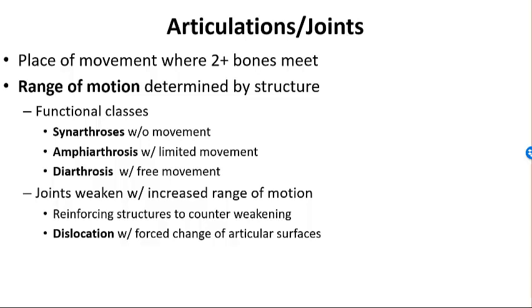Amphiarthrotic joints allow for a slight amount of movement — more than a synarthrotic joint, but still much stronger than a freely movable joint. A diarthrotic joint is this freely movable joint. These joints provide a wide range of motion and are typically seen in the joints of our appendages — our limbs, upper bodies, and lower bodies.